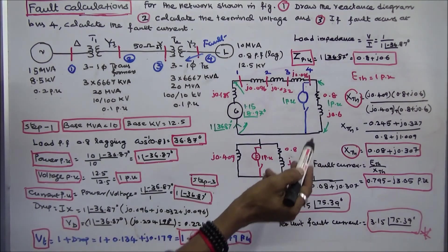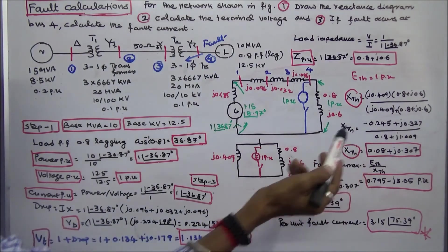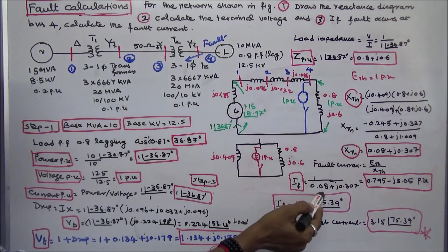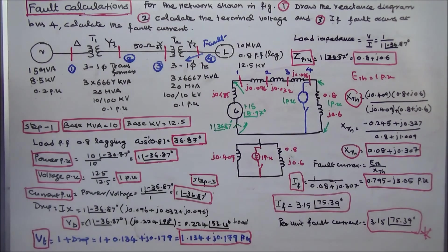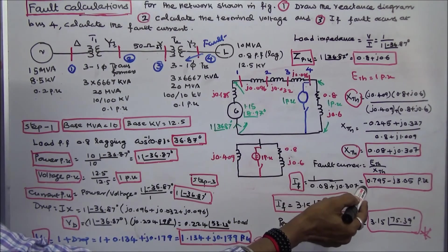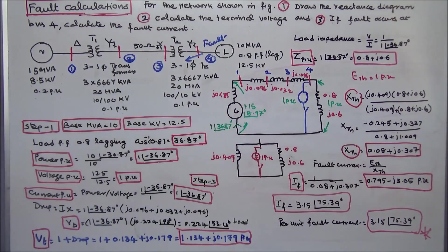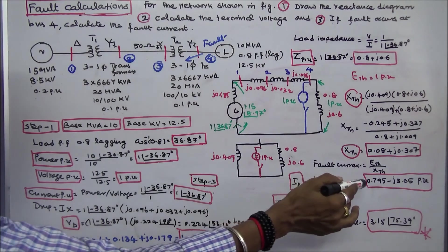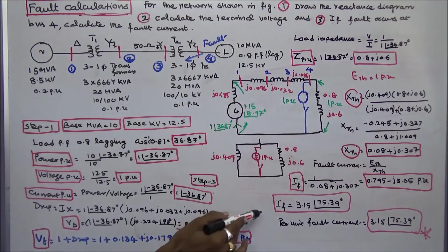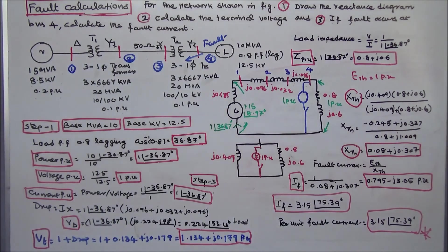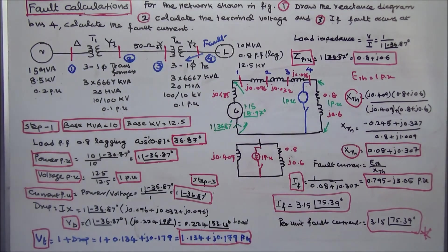Now I can calculate the fault current. Fault current = E_Thevenin / Z_Thevenin = 1 / (0.08 + j0.307). Fault current equals 0.795 − j3.05 per unit in rectangular form. In polar form, fault current is 3.15∠−75.39° per unit.